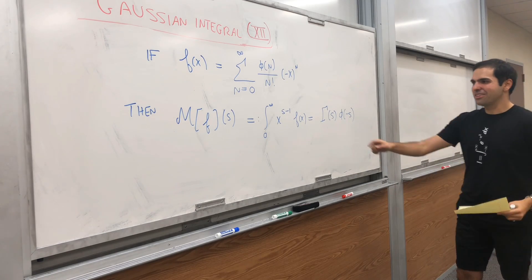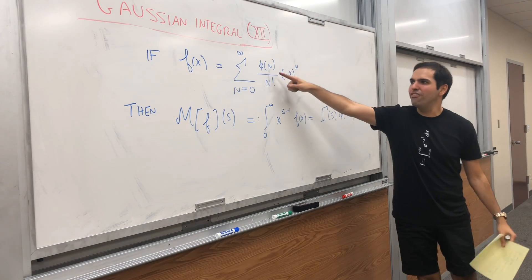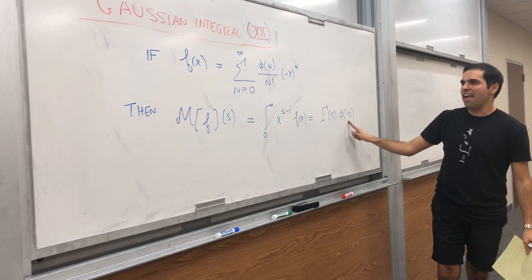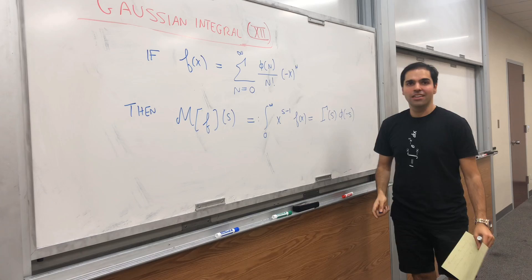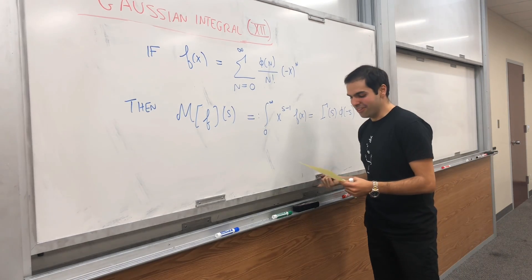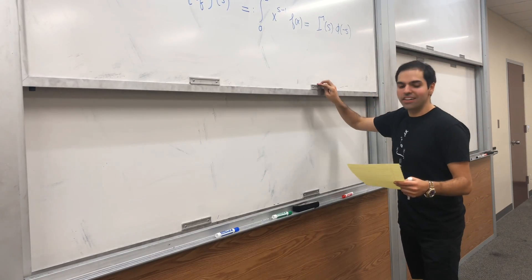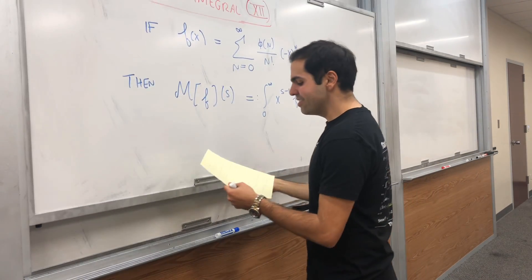Weird. Turns out this integral equals the gamma function times the coefficient, but instead of integers, you put minus s, sort of like the Riemann zeta function. Let's use this fact to calculate our Gaussian integral.